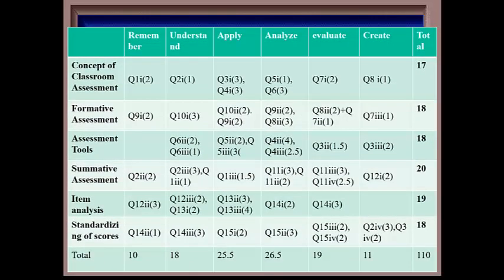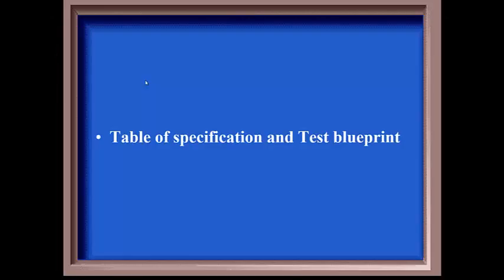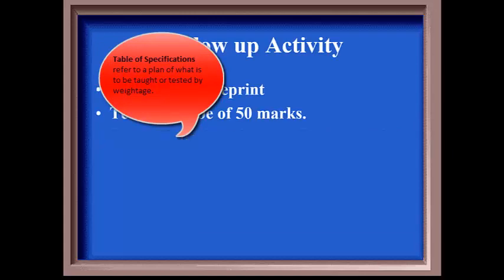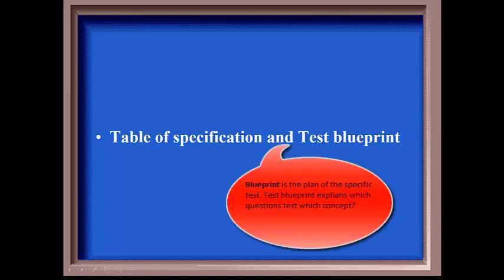In final step, we have to mention question number. For instance, in first cell of table of specification we have two. In test blueprint, we convert the mark in question form, so two can be written as question number one sub question one bracket two. This indicates question one carrying two marks. Marks should be in a bracket. This table is test blueprint. Strictly speaking, there is a difference between a table of specifications and a blueprint. Table of specifications refers to a plan of what is to be taught or tested by weighting, but blueprint is the plan of the specific test.